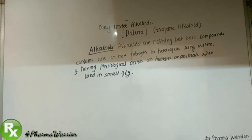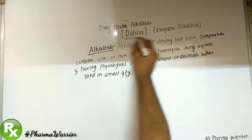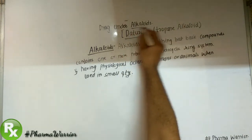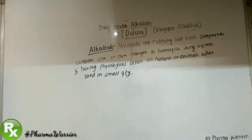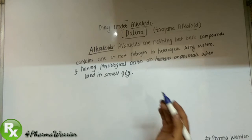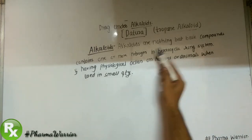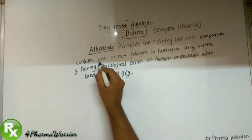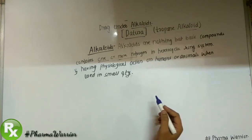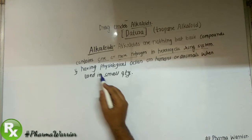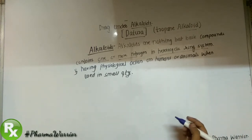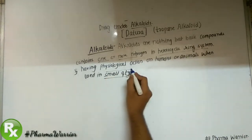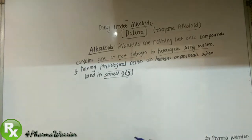Welcome to Pharma Warrior. Today we are going to discuss the drug named Dhatura, which comes under the category of alkaloids — specifically the tropane alkaloids. Before discussing this drug, we must learn what alkaloids are. Alkaloids are basic compounds which contain one or more nitrogen atoms in a heterocyclic ring system and have physiological action on humans as well as animals when used in small quantities.